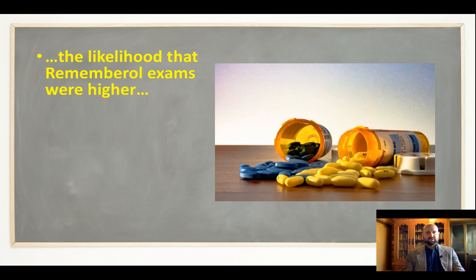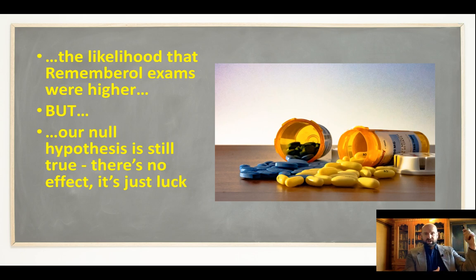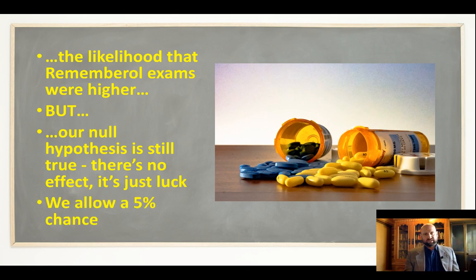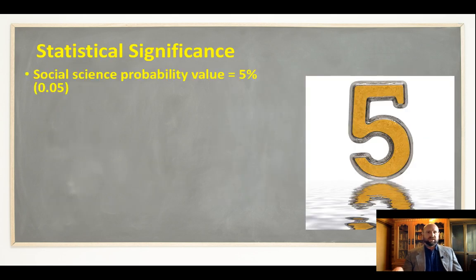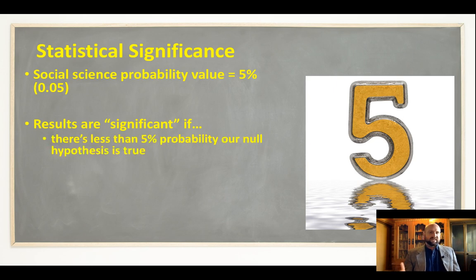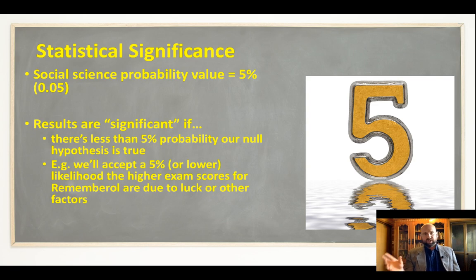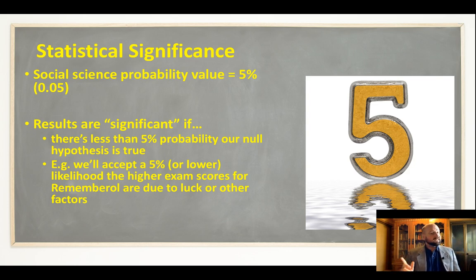What's the likelihood that Remembrol exam scores were higher, but my null hypothesis is still true? Even though they got a higher result, what's the probability that the null hypothesis — that there's no significant difference, it's just chance or other factors — is still the case? We allow a 5% chance. When we talk about statistical significance, we look at the magic number 5 — a probability value of 5%, phrased as a decimal: 0.05. Our results are significant if there's less than a 5% probability that the null hypothesis is true. We can accept 4%, 1%, even 0.1% — but if there's a 6% chance the null hypothesis is still true, we can't accept it. Our results are not significant. We need a cutoff point, and that cutoff point is at 5%.